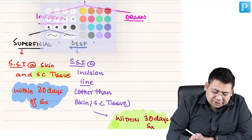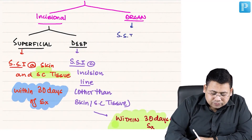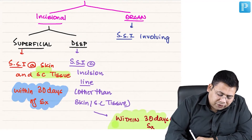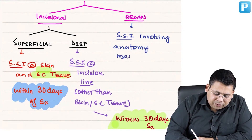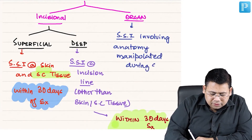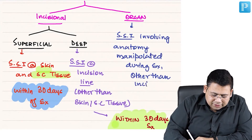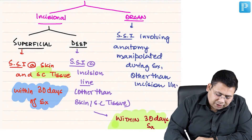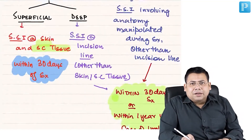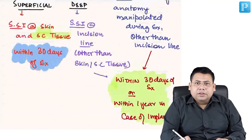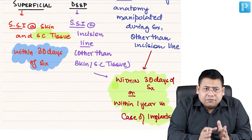Next is organ SSI. Organ SSI is defined as SSI involving anatomy manipulated during surgery, other than the incision line, occurring within 30 days of surgery or within one year in case of implants.